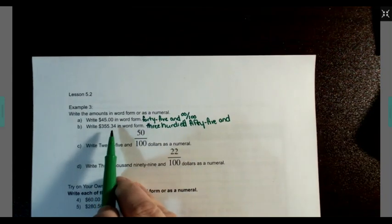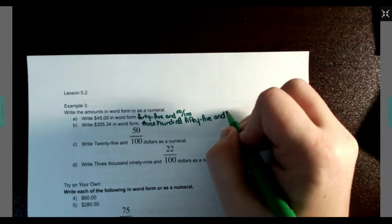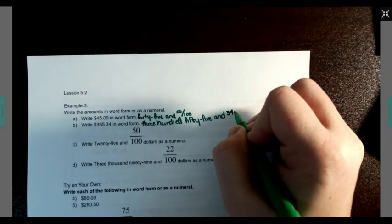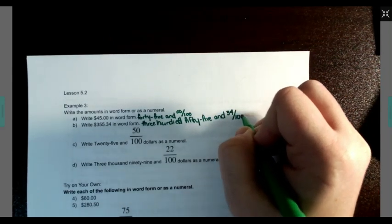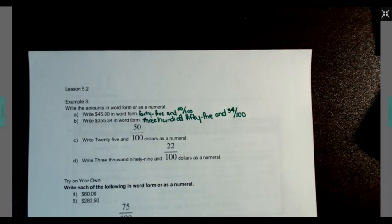And we're going to write this change or my cents in the form of a fraction over a dollar. So 34 over 100.